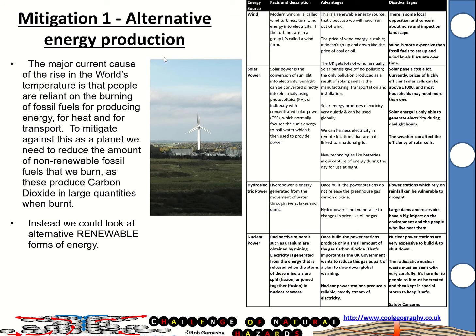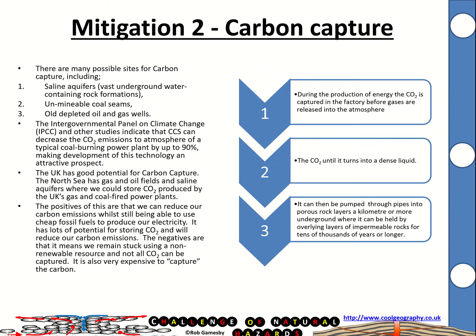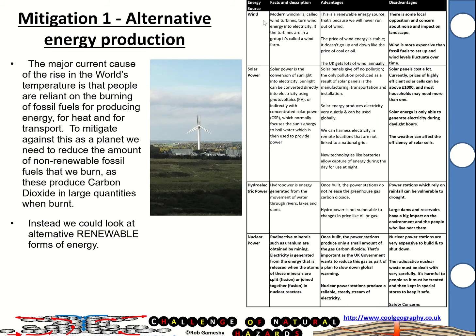One mitigation option is to turn to alternative energy production. You can see some wind turbines there. One of the major causes of the rise in the world's temperature is that people are too reliant on burning fossil fuels for energy, transport, and heat. To change that, we can move away from non-renewable fossil fuels and towards renewable alternatives like wind turbines.